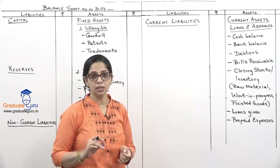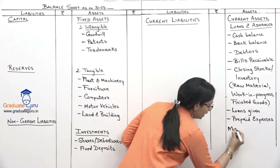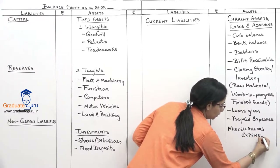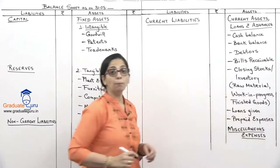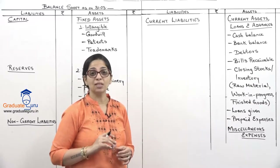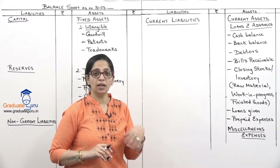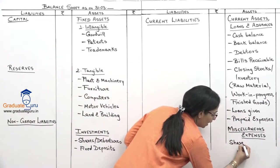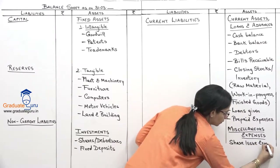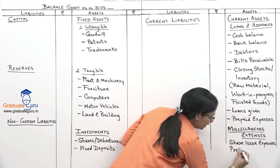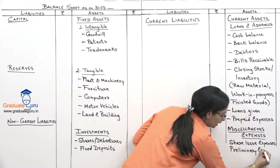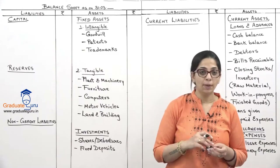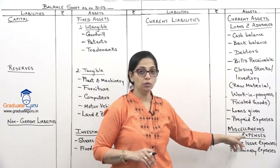Apart from these main heads of assets, we have something called miscellaneous expenses. This is generally for companies — registered companies under the Companies Act. When a company issues shares or debentures, the expenses incurred can be shown here as share issue expenses. There is also something called preliminary expenses — the expenses incurred to start the business. Any expense which is capital in nature but does not fall under any other head goes to miscellaneous expenses.